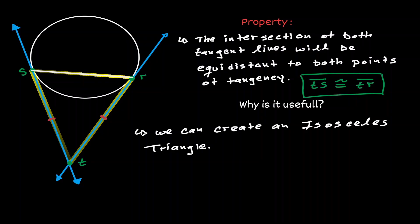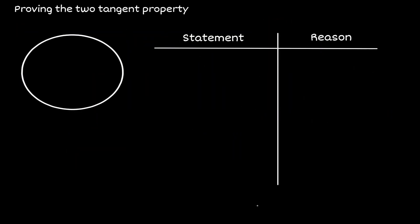Now let's explain why this property is true. So let's say that we are given two tangent lines where the points of tangency is R and S, and the point of intersection, let's call it T.